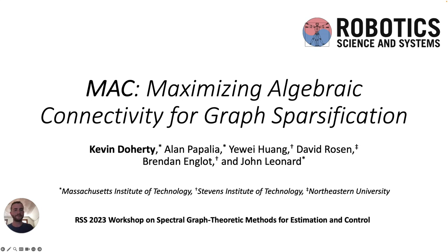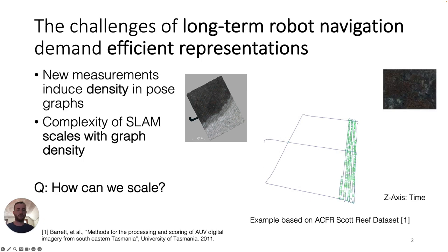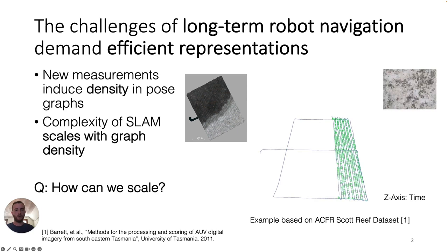One of the main applications that motivated our investigations into graph sparsification and spectral graph theory was the problem of long-term robot navigation. The common pose-graph SLAM paradigm models the pose of a robot at each point in time as a node in a graph, and the measured relative transforms between those poses are the edges. In Visual SLAM, we introduce new edges between poses whenever the robot observes the same features across different images. I'm visualizing here a trajectory of an underwater robot performing a standard lawnmower survey of a coral reef, highlighting in green potential loop closures where there's significant overlap in the robot's field of view.